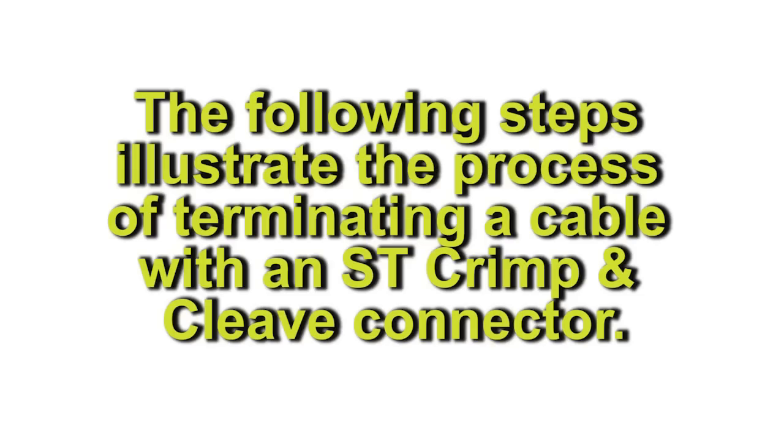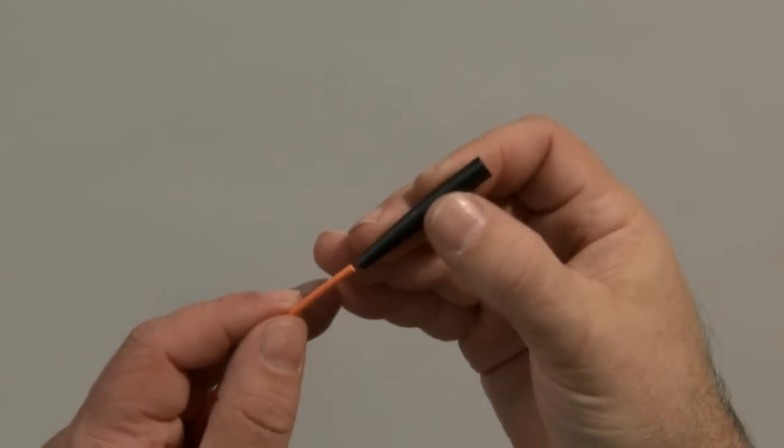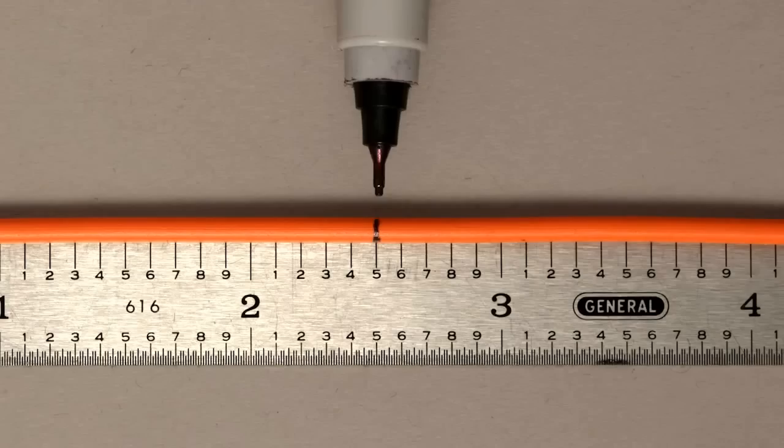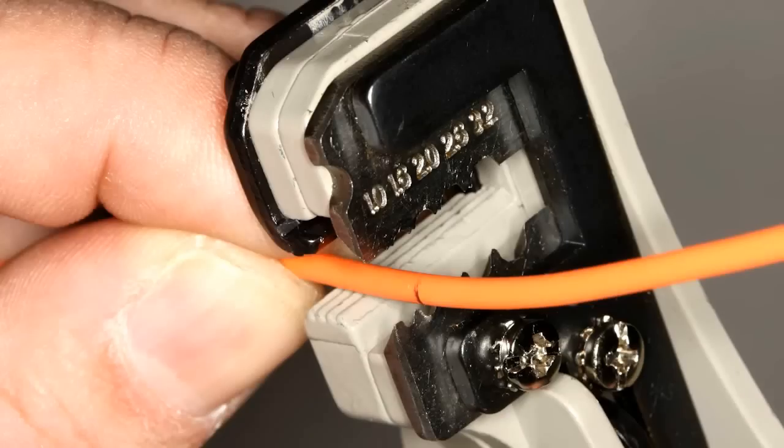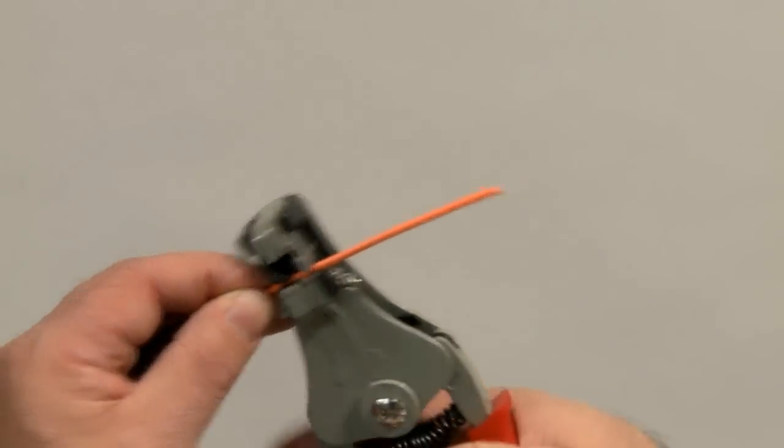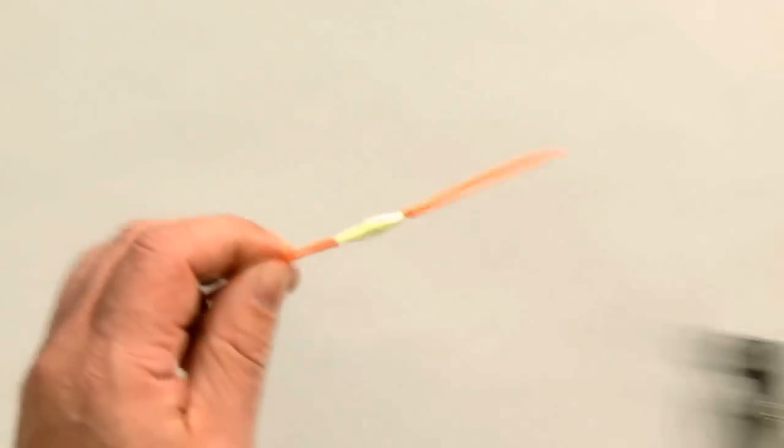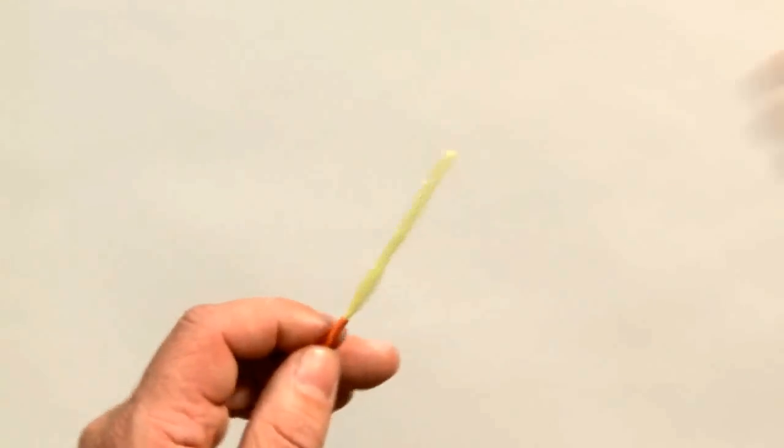The following steps illustrate the process of terminating a cable with an ST crimp and cleave connector. Slide the strain relief boot onto the cable, narrow end first. Mark the outer jacket of the fiber optic cable at 2½ inches. Select the correct hole in the cable stripper for the size of the outer jacket of your cable. Strip the outer jacket at the 2½ inch mark or in shorter sections to make removal easier.